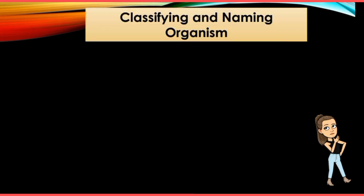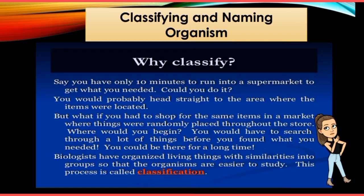Next, classifying and naming organisms. Imagine you were asked to go grocery shopping and the items were not grouped together — sabon next to bagoong, then suka, then shampoo in a different aisle. It would take very long to shop. So there is a real need for classifying things and organisms. Biologists have organized living things with similarities into groups so that the organisms are easier to study, and that process is known as classification.